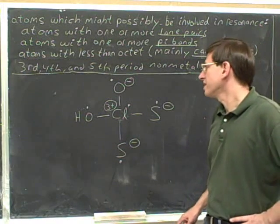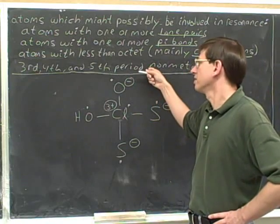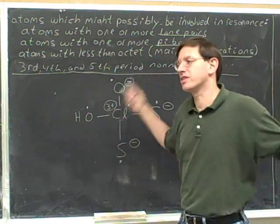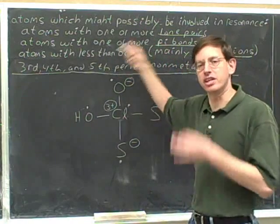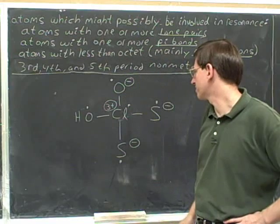Now keep in mind, if you're a third period non-metal and you have these other characteristics too, then you can still have resonance. Remember, it's perfectly okay to have more than one of these characteristics. You only need one of these characteristics to be a candidate for resonance.